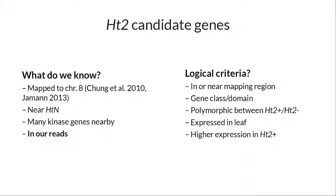This allowed us to narrow down from 100-200 genes down to two strong candidates for HT2. The nice thing is when you look at the sequence of these reads, you can find things that were previously at the top of our list. You look and say there's no polymorphism — they're expressed exactly the same — you can't find any difference between the two isolines. We can use what we have in hand to prioritize: some go down the list, others move up.